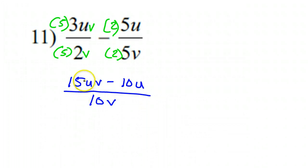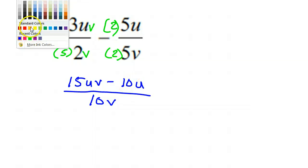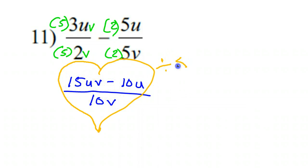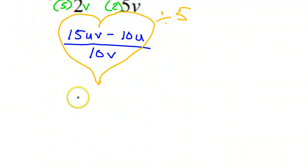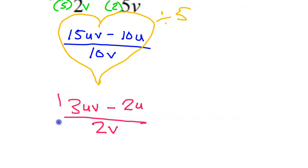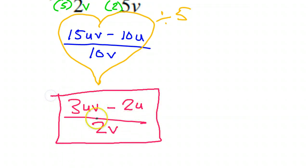Is there anything common to all three? Yes — they are all divisible by 5. They don't have any variables in common though, so only 5. If I divide each of these by 5, I will arrive at my final answer. 15 divided by 5 gives 3uv; 10 divided by 5 gives 2u, over 2v. This will be the final answer — nothing left to factor, no GCF.